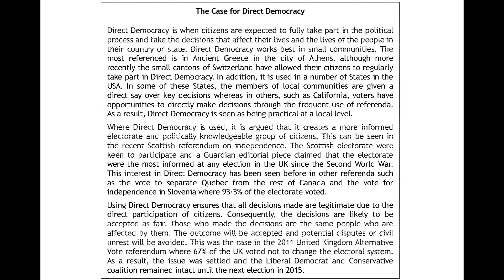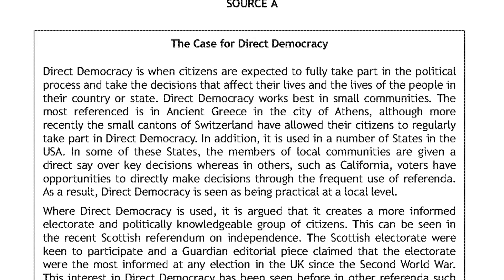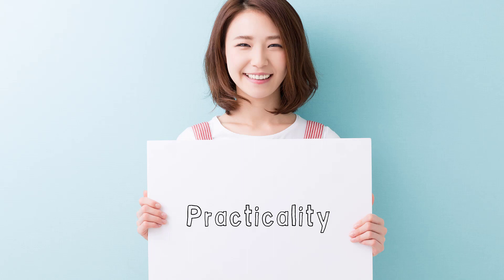Let's begin by reading the first paragraph in Source A, which presents the case for direct democracy. As you listen, try to think of one word that sums up what the paragraph is referring to. Direct democracy is when citizens are expected to fully take part in the political process and take decisions affecting their lives. It works best in small communities — most referenced in ancient Athens — and in the small cantons of Switzerland. It is also used in some US states, such as California, where voters make decisions through the frequent use of referenda. As a result, direct democracy is seen as being practical at local level. For me, the word that sums up that paragraph is practicality.